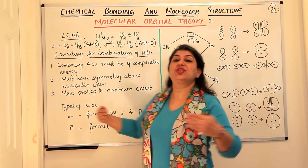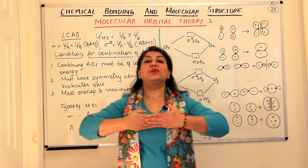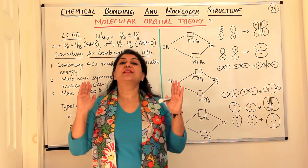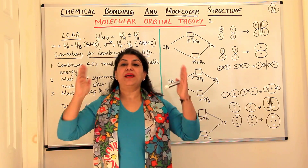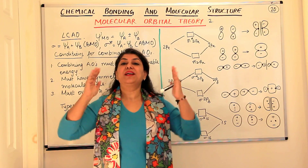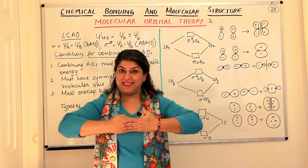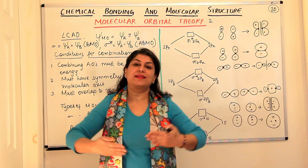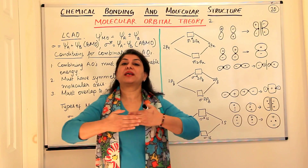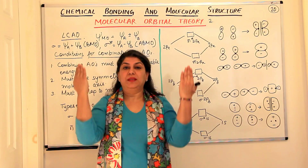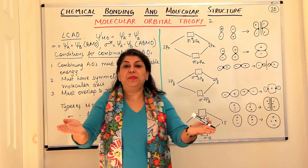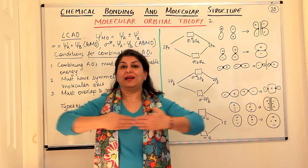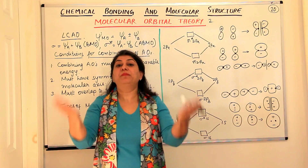The p orbitals are along the z-axis, x-axis, and y-axis. The x and y axes are perpendicular to the internuclear axis. The orbital along the internuclear axis overlaps head-on and therefore forms a sigma bond. But the py and px are perpendicular to the internuclear axis and result in overlap not along the internuclear axis.